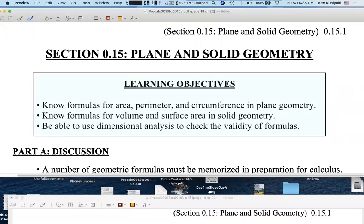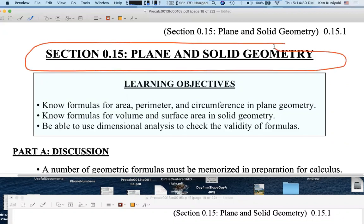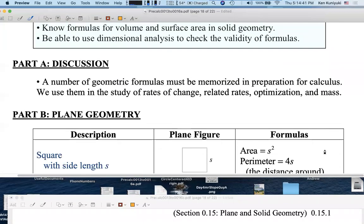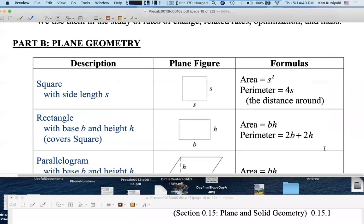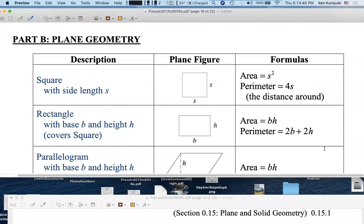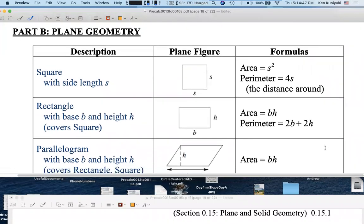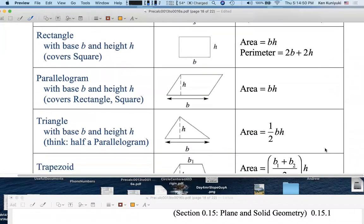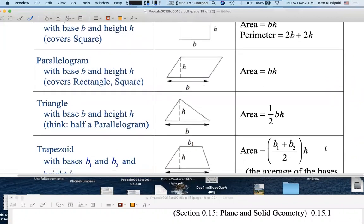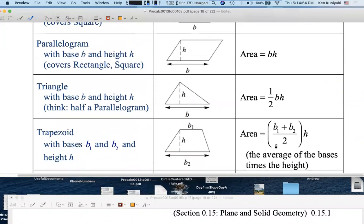Hi everyone. I expect you to remember all of your formulas from plane and solid geometry. In plane geometry, that would include things like area and perimeter for squares, rectangles, parallelograms in general, triangles, and trapezoids. The area of a trapezoid is the average of the bases times the height. Did you remember that?